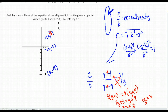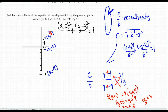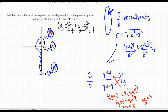Our standard form starts as (x − 2)² / a² + (y − 3)² / b² = 1. C is the distance from center (y=3) to focus (y=−1), which is 4. B is the distance from center (y=3) to vertex (y=−9), which is 12.